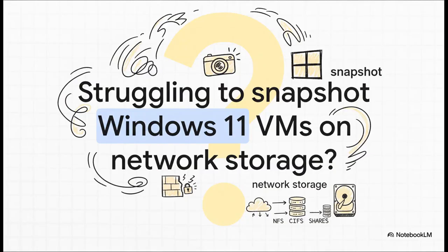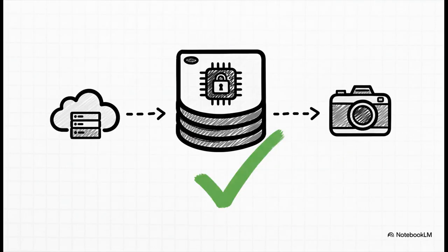Let's get real for a second. If you're running modern Windows guests, you've probably felt this pain. Have you ever tried to snapshot a Windows 11 VM that has a TPM, especially when its disk is sitting on an NFS or a CIFS share? Yeah, it's been a major headache. Well, Proxmox 9.1 fixes it. The virtual TPM state now gets stored right inside the QCOW2 disk file itself. It means the snapshot problem is just gone — one of those quiet, behind-the-scenes changes that removes a massive roadblock for anyone running modern VMs.